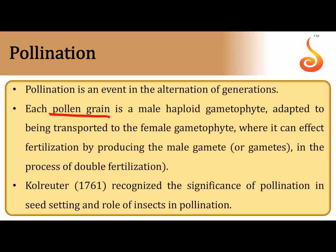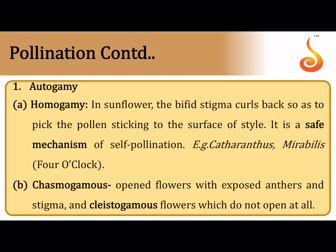Pollination is when pollen grains from the anther fall onto the stigma. It is very important because pollen grains carry the non-motile male gamete and must be transported to the female part of the plant to reach the female gametophyte. Konrad recognized the significance of pollination in seed setting and the role of insects in pollination.